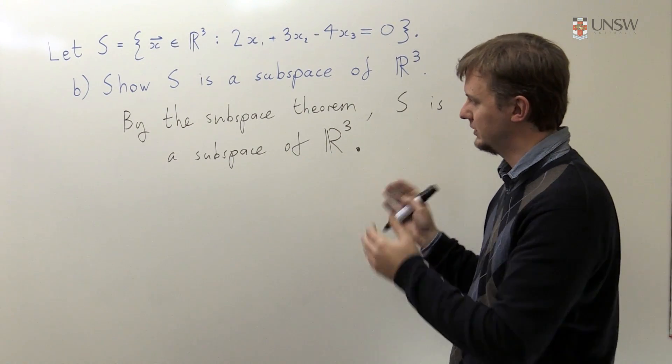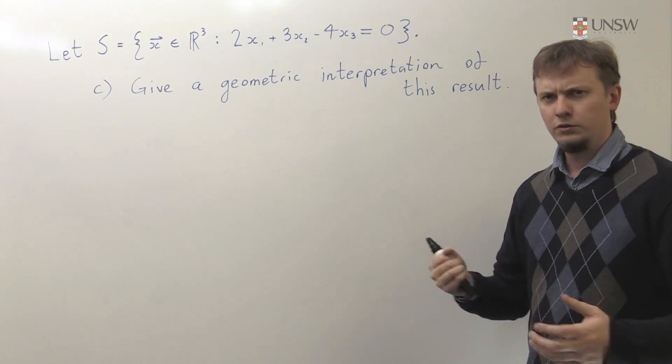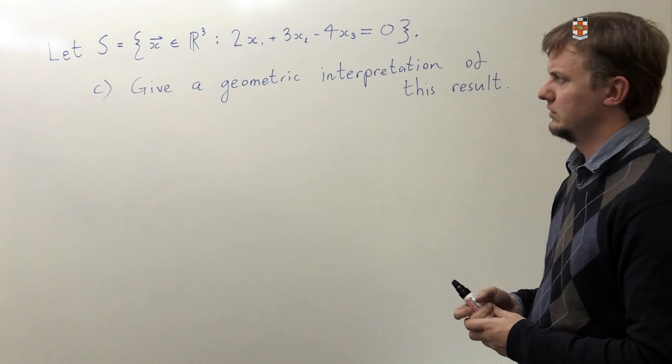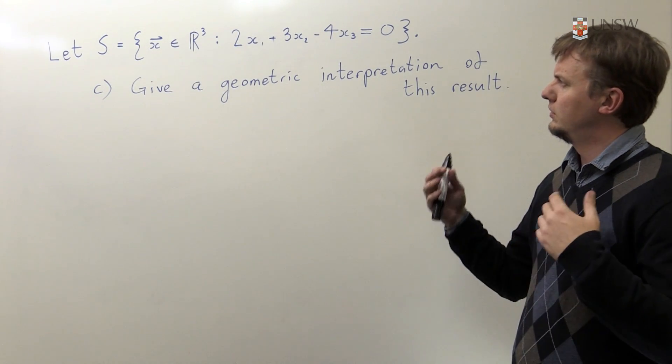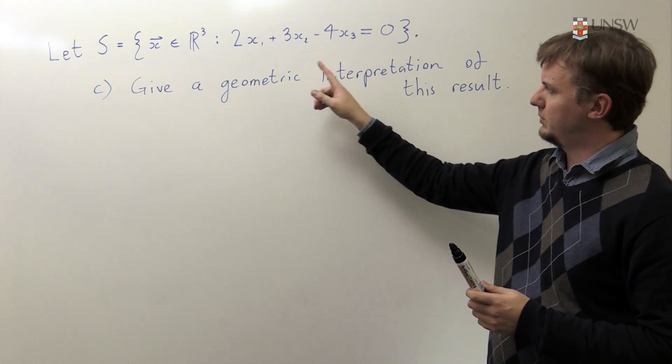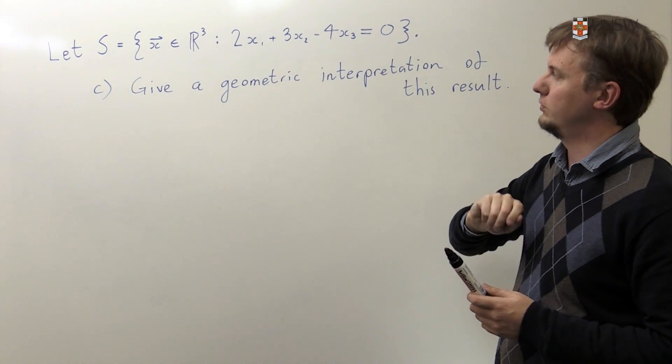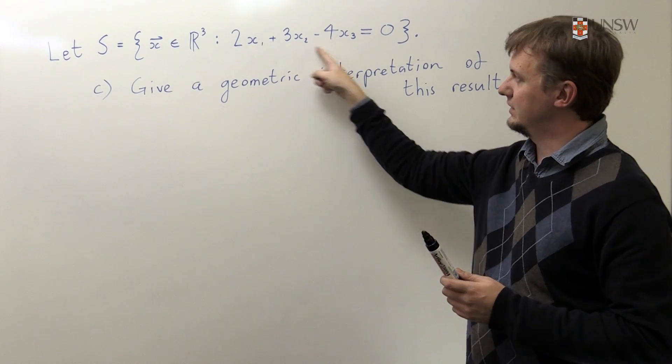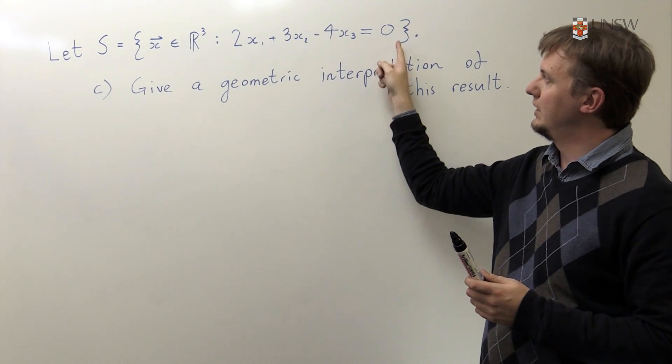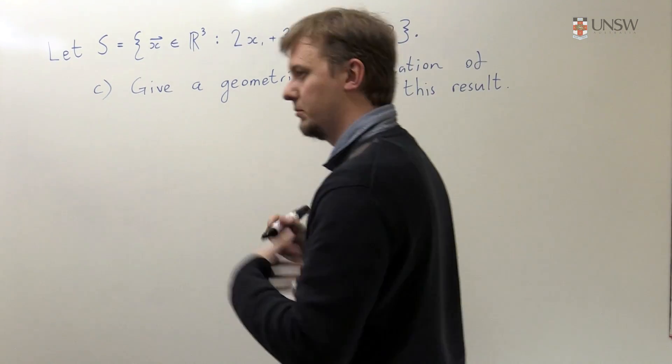So the final part of this question was asking us to give a geometric interpretation of what just occurred. So if you have a look at the equation, what's really special about this equation is that it's the equation for a plane and it passes through the origin, and both of those are important. So this needs to be linear in X1, X2, X3, and this has to be 0 - it has to pass through the origin. So that's going to be my interpretation.